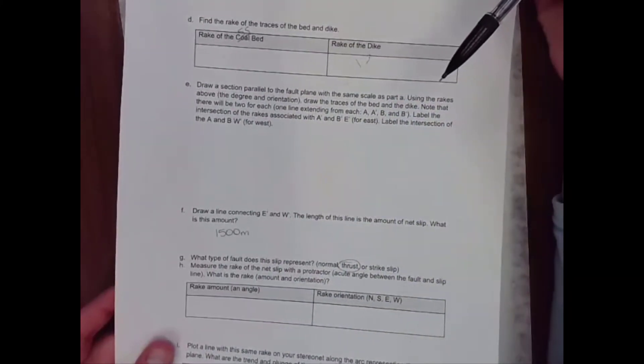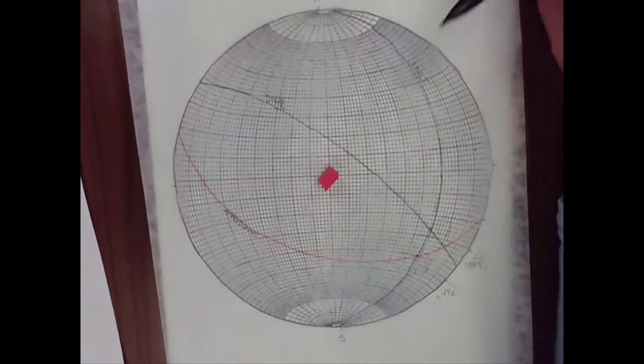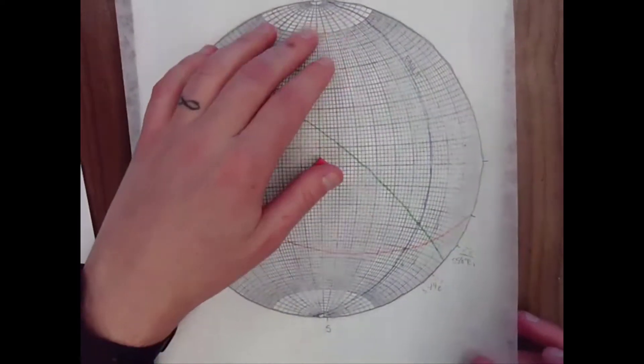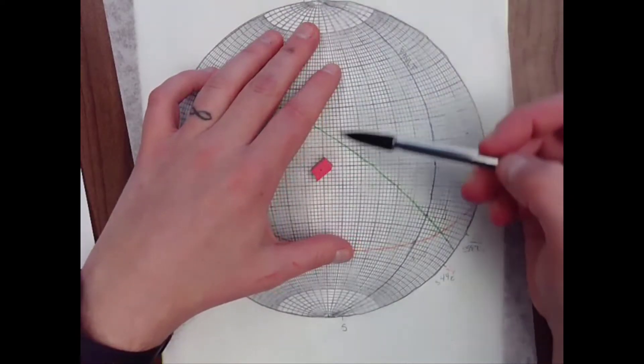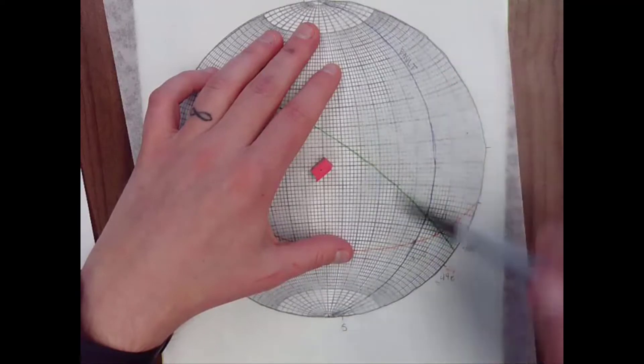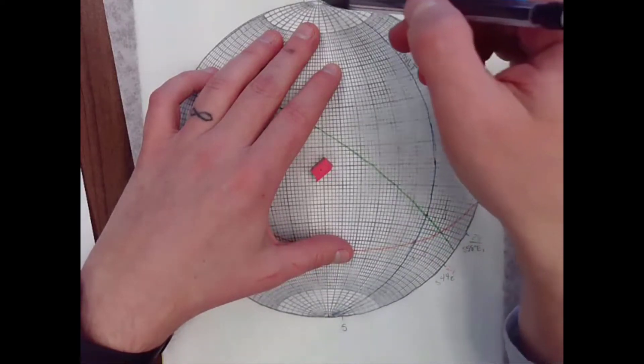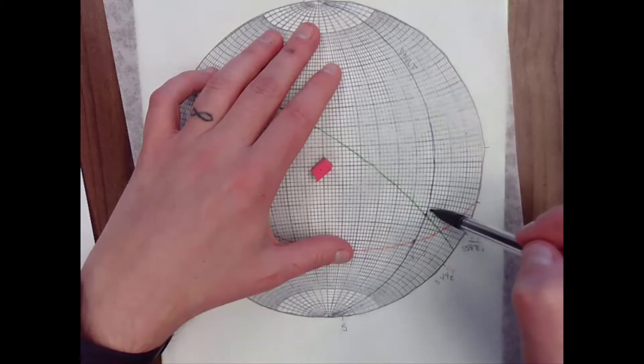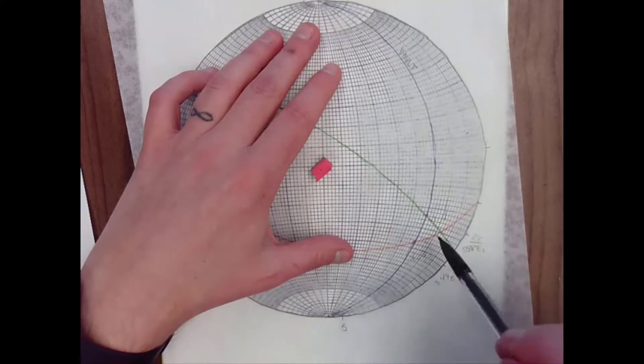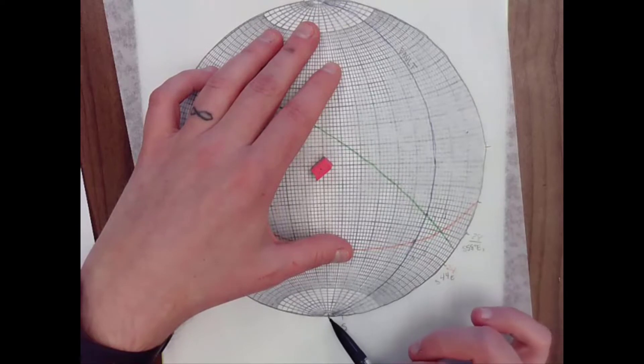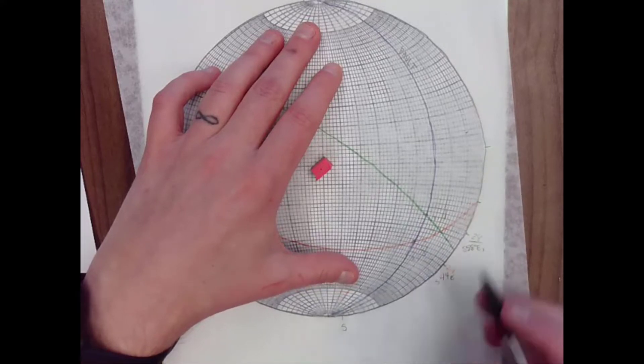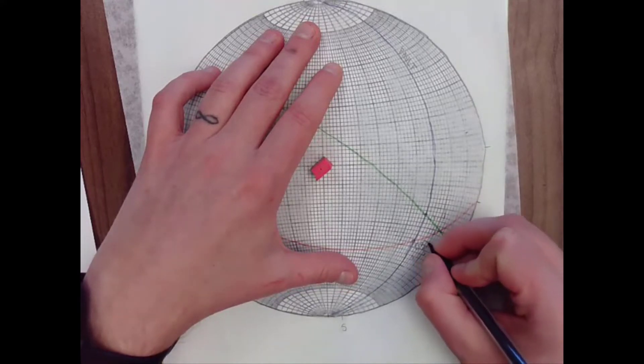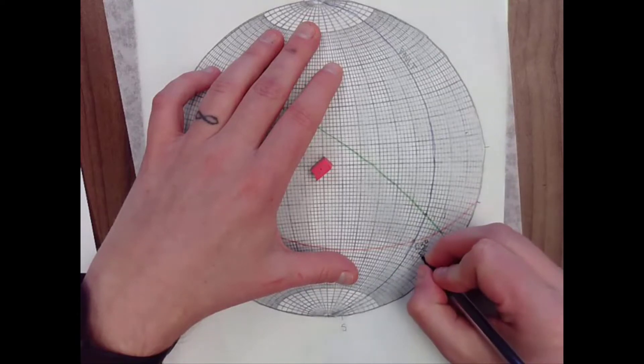Next, the problem asks us to find the rake of the traces of the bed and the dike. Well, rake is our difference from strike. So we're going to rotate it so that the fault is lined up with strike along this vertical great circle. And then we count the acute angle. So here, this is a really big arc. So it's probably an obtuse angle. So instead, I'm going to come down here from the south and count. And I count 10, 20, 30, 40, 50, 53 degrees. And my orientation is to the south, southeast.